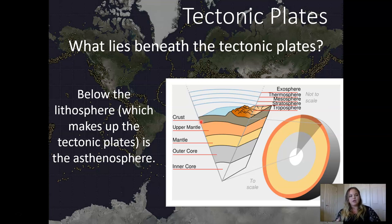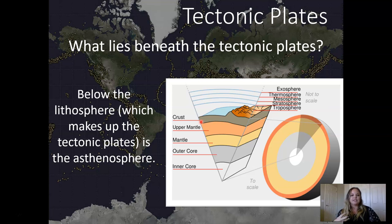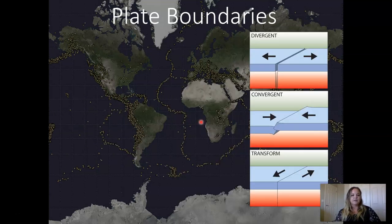The tectonic plates slide on the asthenosphere. Remember the asthenosphere is directly below the lithosphere and it's what allows the tectonic plates to actually move. It is a little bit more molten — like a Laffy Taffy — so as it heats up it becomes more mobile. It is not solid rock, so the tectonic plates move along molten rock, which is the asthenosphere.